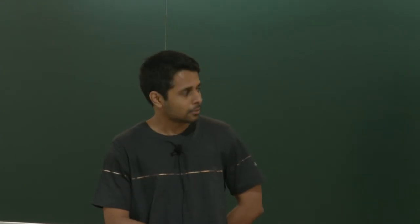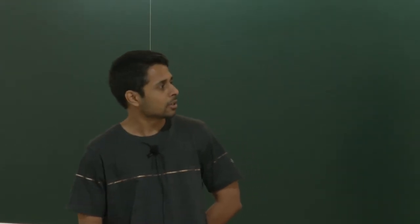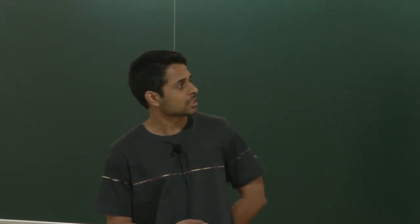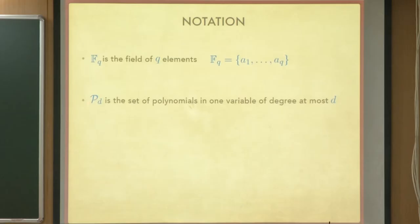Let us fix some notation. F_q is the field of q elements, and the point is that there is some ordering — an arbitrary ordering of elements, it does not really matter. P_d is a set of polynomials of degree at most d, univariate polynomials. So this is some basic notation that we agree on.